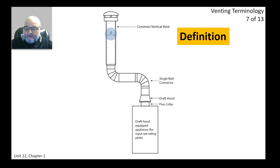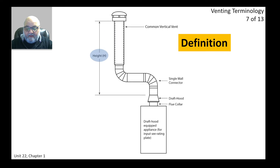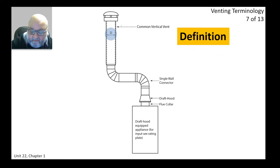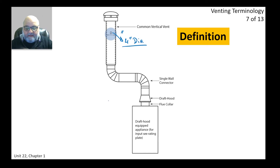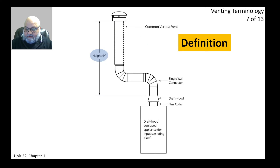Similar to gas piping sizing from last semester, draft is simply a fluid — a gas — flowing in a conduit or pipe. For that we need to know the diameter, which we call the 'size.' Diameter is measured in inches as inside diameter. So if I say four inches in diameter, the inside wall is four inches; the outside wall diameter is typically one inch more, making it five inches.